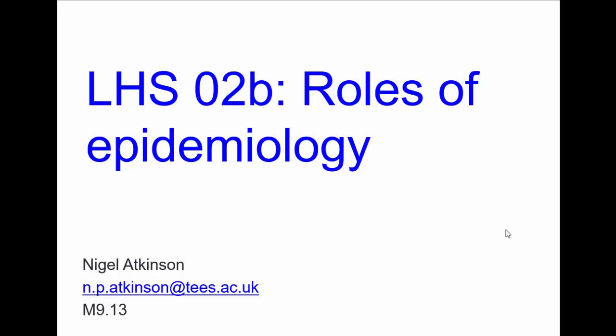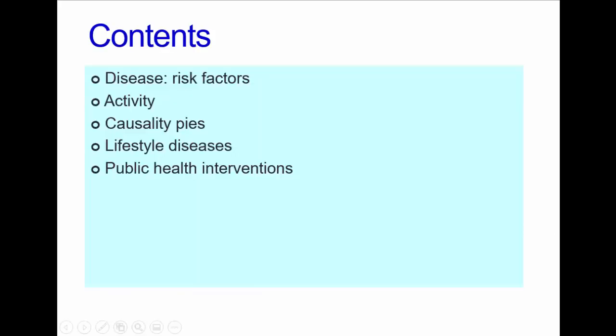In the second part, we're going to look at the rules of epidemiology. We're going to have some definitions and talk about how we think about people's risks to particular issues associated with lifestyle and life course, and talk a little bit about public health interventions later on.